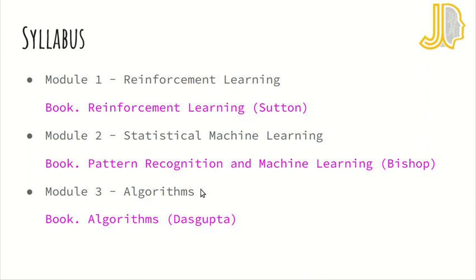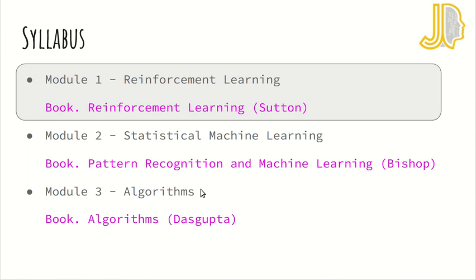For example, in module one on reinforcement learning, at some point we'll reach deep reinforcement learning, which requires knowledge about deep learning. That knowledge will be properly explained when we get to the second module on statistical machine learning. The statistical machine learning and algorithms modules will run in parallel, so please be aware of that.